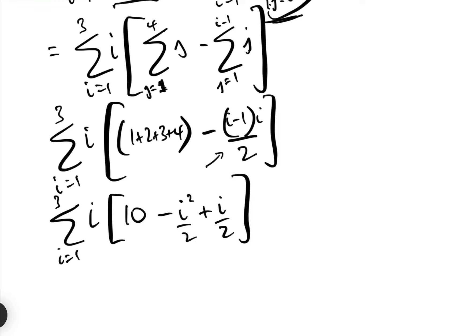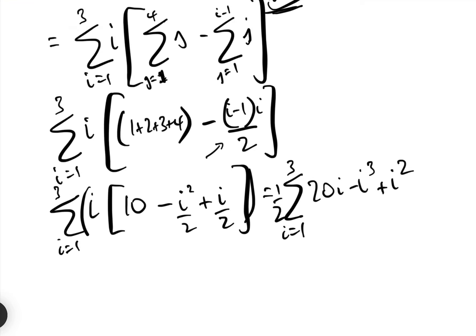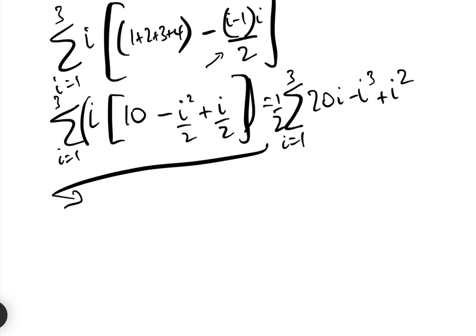So now we have the sum between i equals 1 and 3 of i times 10 minus i squared over 2, plus i over 2. All I've done is expanded that expression. This equals the sum over i equals 1 to 3 — let's take the half out to make it a little bit easier — of 20i minus i cubed plus i squared.